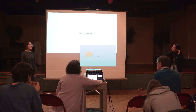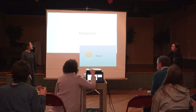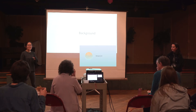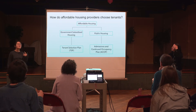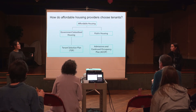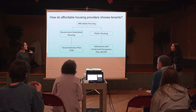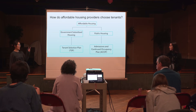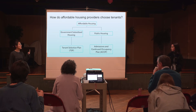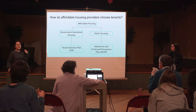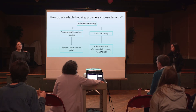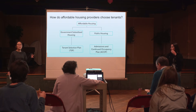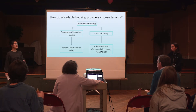So some background on admissions policy. How do affordable housing providers choose tenants? Affordable housing is actually divided into two subcategories: government subsidized housing and public housing. They each have their own admissions policies — TSPs for government subsidized housing and ACOPs for public housing. Going forward, we'll just call them all TSPs to make it easier.